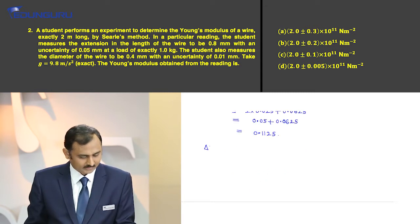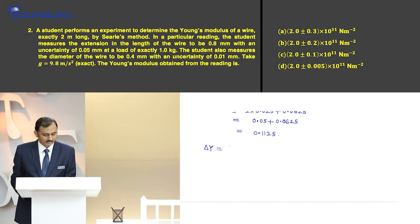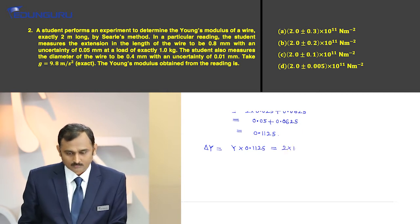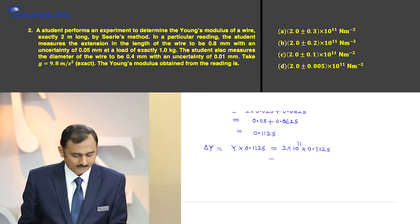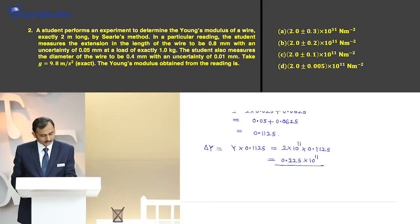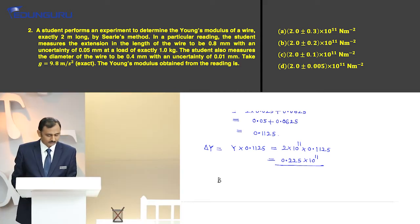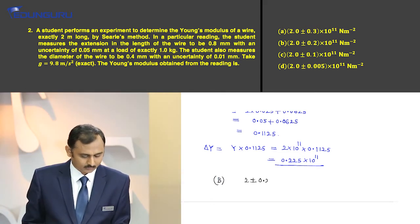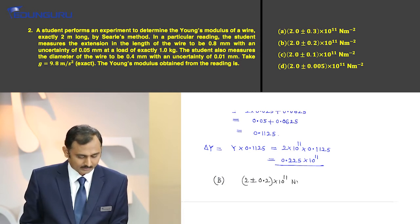So the error in Young's modulus δY = Y × 0.1125. With Y = 2 × 10¹¹, we get δY = 0.225 × 10¹¹. Looking at the options, the correct option is B: (2 ± 0.2) × 10¹¹ N/m².